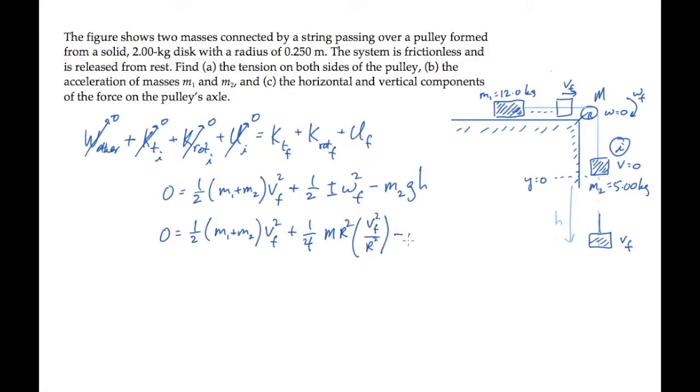And now we can cancel the r's from this expression and solve for v final squared, the square of the final speed, to get this expression.